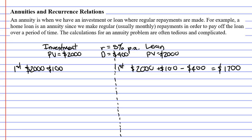What's different is the repayment. Our repayment is $400. For an investment, we actually add it on, because we're trying to increase our investment — we're not trying to pay it off, we want more money in there.